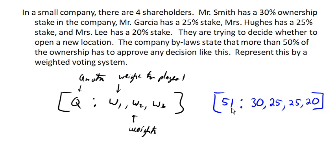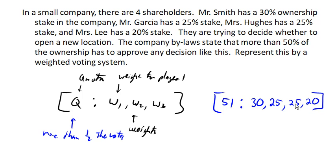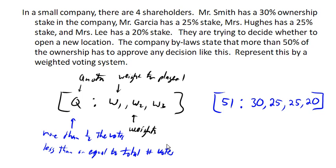It's good to note that the quota value always has to be more than half the votes. Because if it were exactly half or less than half, then half the voters could vote for it and half could vote against it, and both sides would be reaching the quota — which doesn't make sense. And certainly, the quota cannot be bigger than the total number of votes or total weights. In this case, it wouldn't make sense for the quota to be 101, because there's no way it could be reached even if everyone supported it.